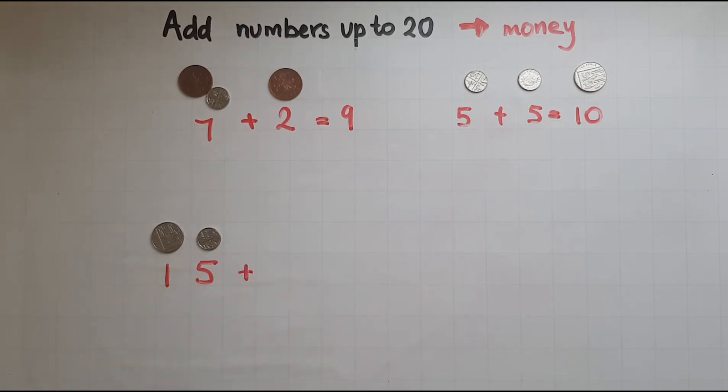So 15 and another two, all together that makes 15, 16, 17. That makes 17 pence.